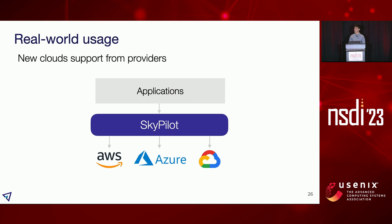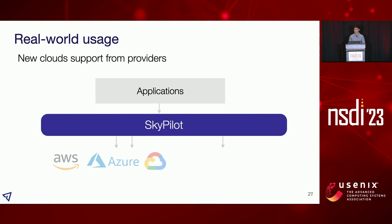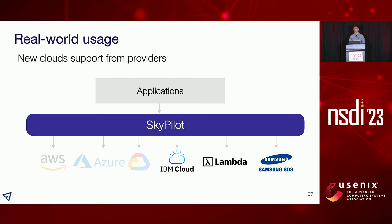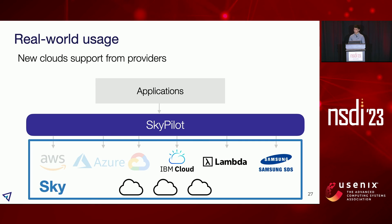From the cloud provider side, we initially supported AWS, Azure, and Google, but in the last few months, engineers from IBM and Samsung have been adding support for their clouds into SkyPilot. We also collaborated with Lambda Cloud, a low-cost GPU cloud provider, to add support for it. Recently, we have been working with NSF Cloud Bank to allow academic labs to use the clouds more easily and cheaply. Going forward, we are excited to work with more cloud vendors to add support for their clouds, and we hope this will make the sky naturally emerge.